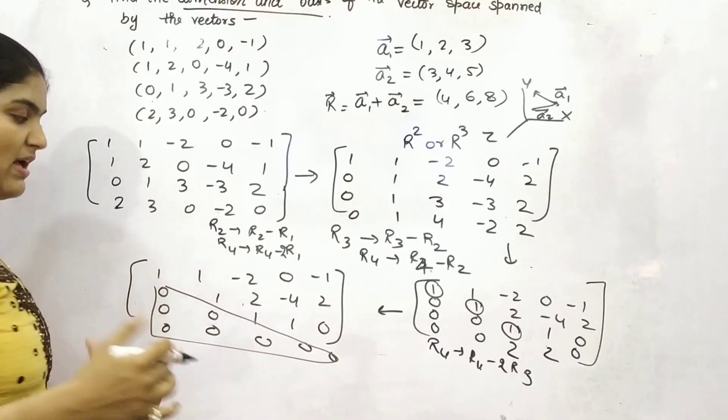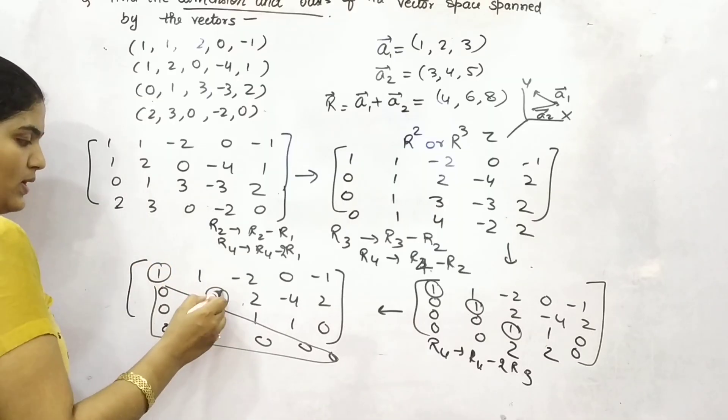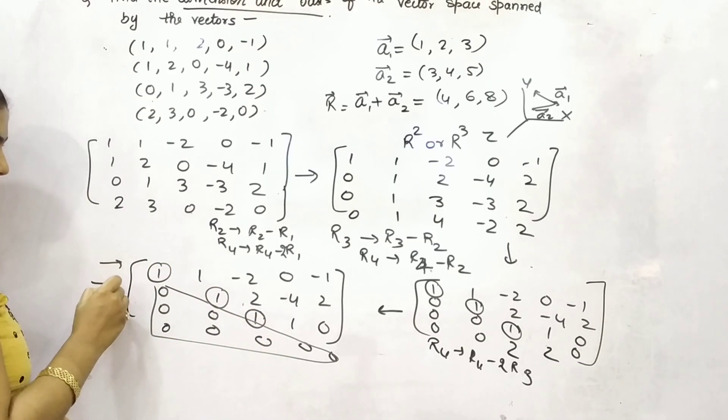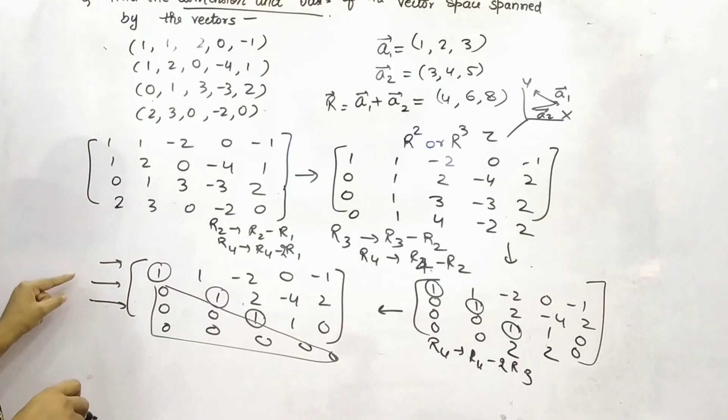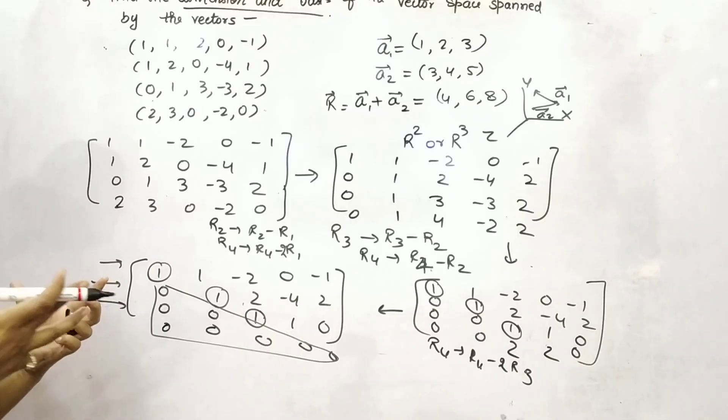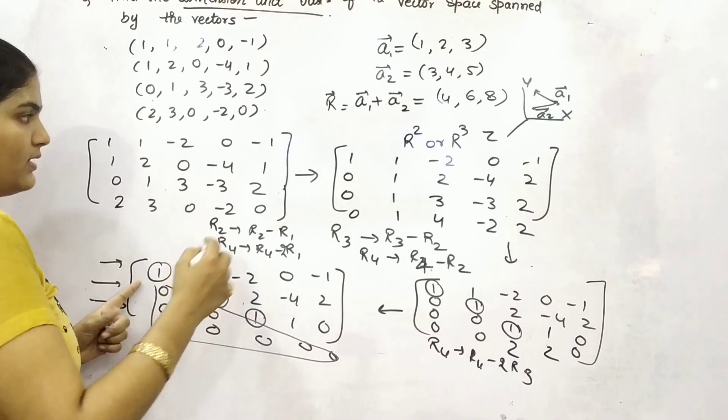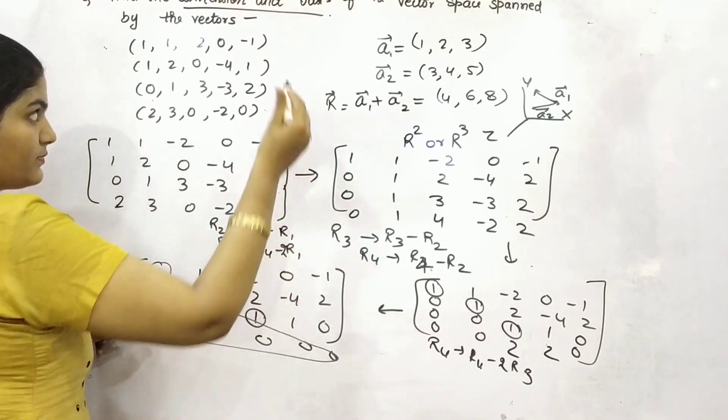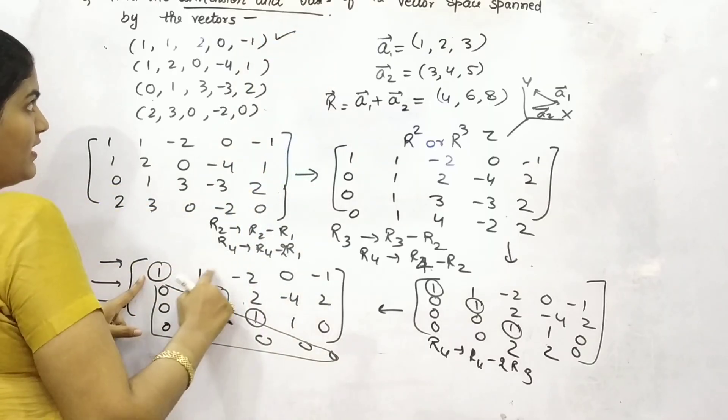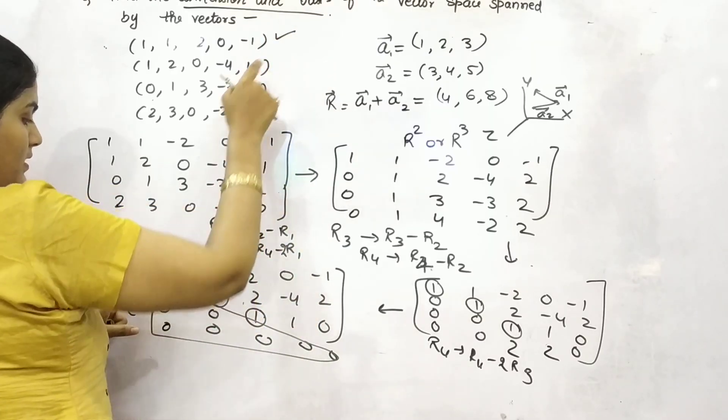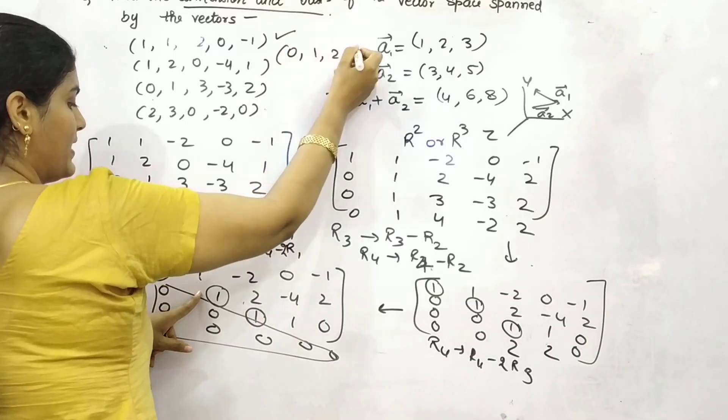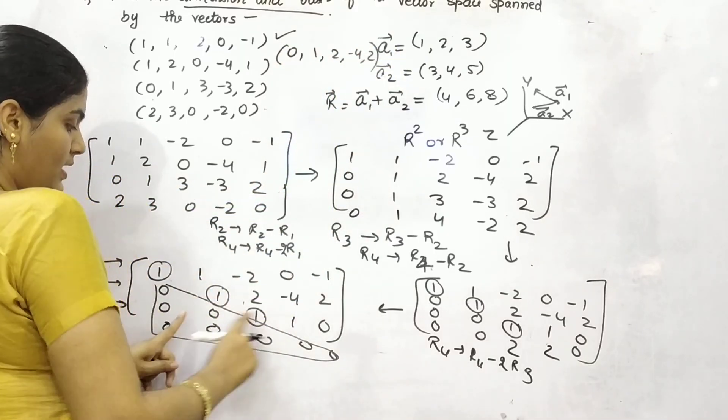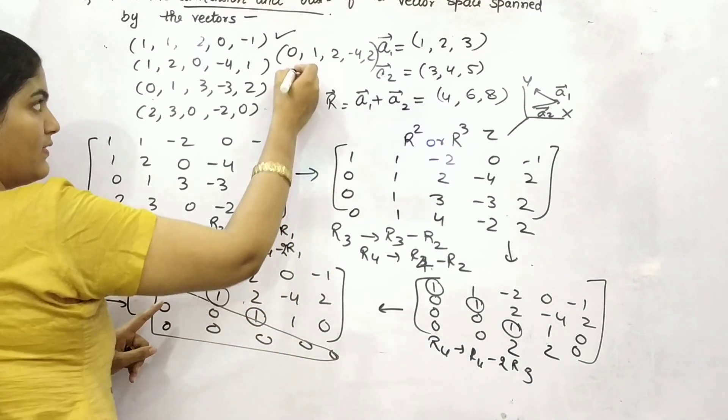Now, check it out, what are the pivot points when you are having 1? So, these 3 rows, these 3 rows will be considered as bases. So, your bases will be this one, 1, 1, minus 2, 0, minus 1. Thereafter, 0, 1, 2, minus 4, 2. And thereafter, 0, 0, 1, 1, 0.